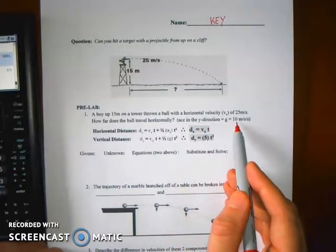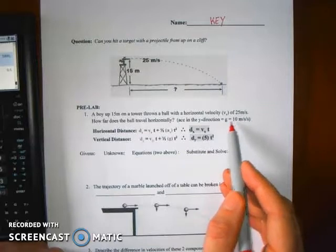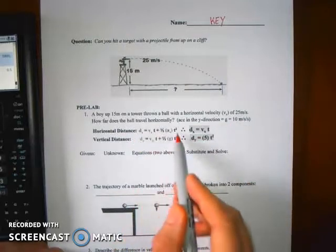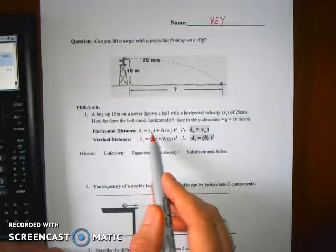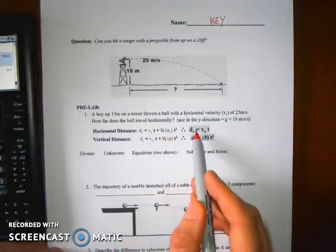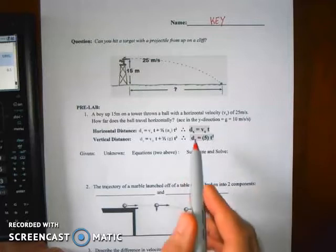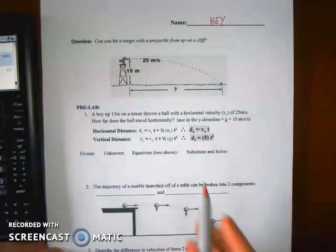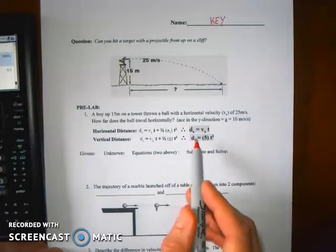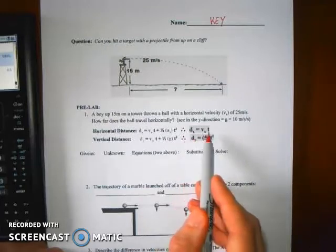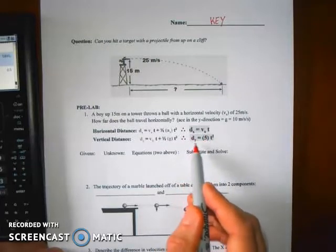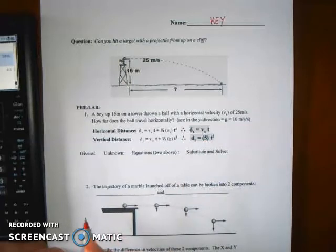And if you use that value and you substitute it into your kinematic equation, d equals vt plus one half at squared, you can get these two equations that we were using in our initial notes. These are the two equations to help relate the horizontal x component of its motion and the y component, the vertical component of its motion.